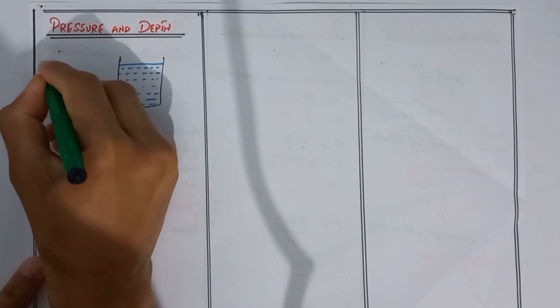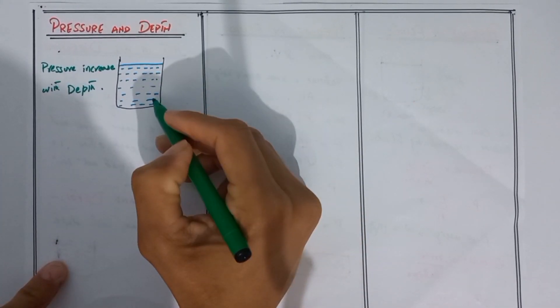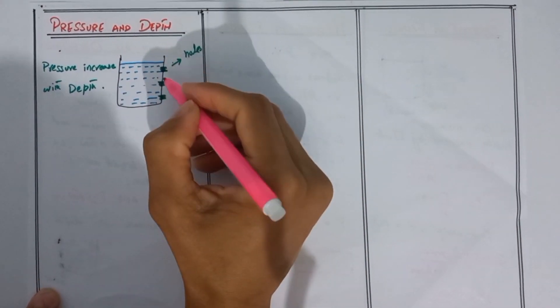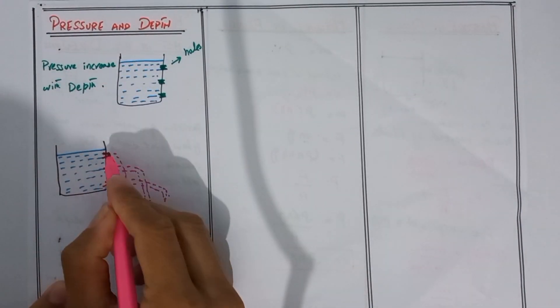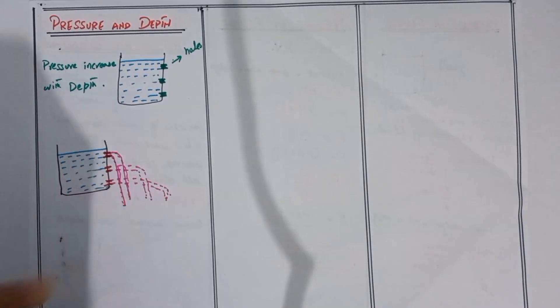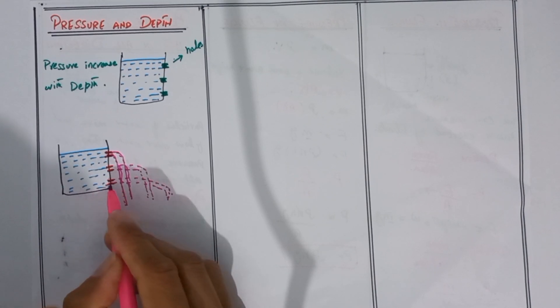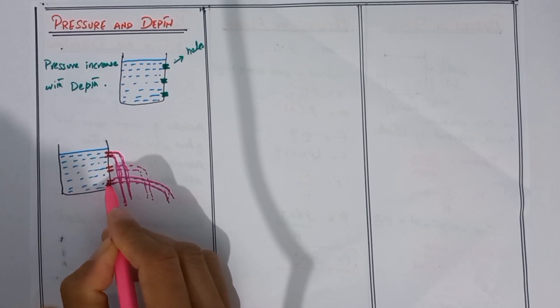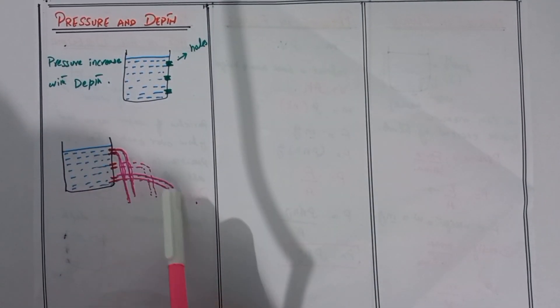We know that pressure increases with depth. Consider a container full of water with 3 holes at different heights. When we open these holes, the top hole is under the least pressure, so water travels a small distance. The bottom hole is under the most pressure and force, so water travels a much greater distance. This confirms that pressure increases with depth.